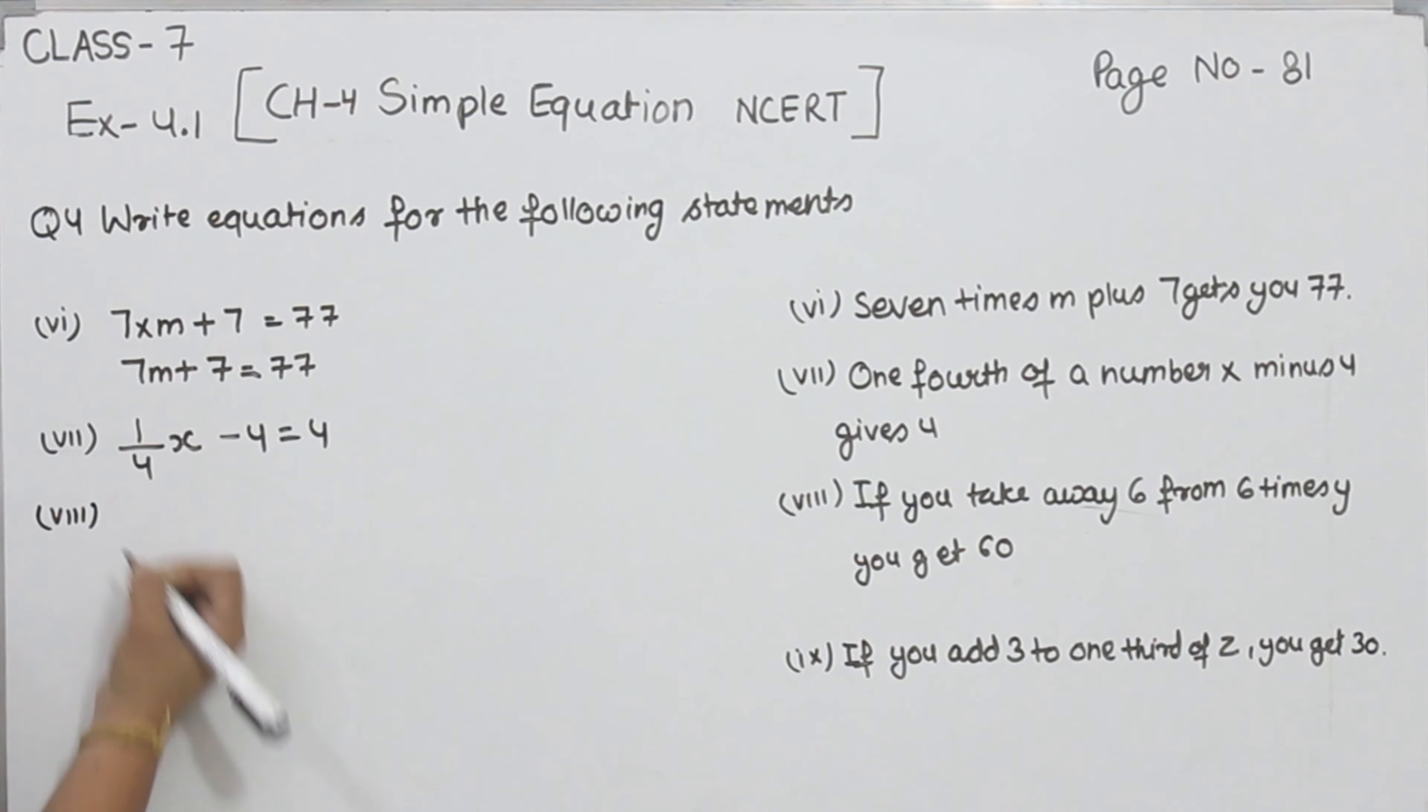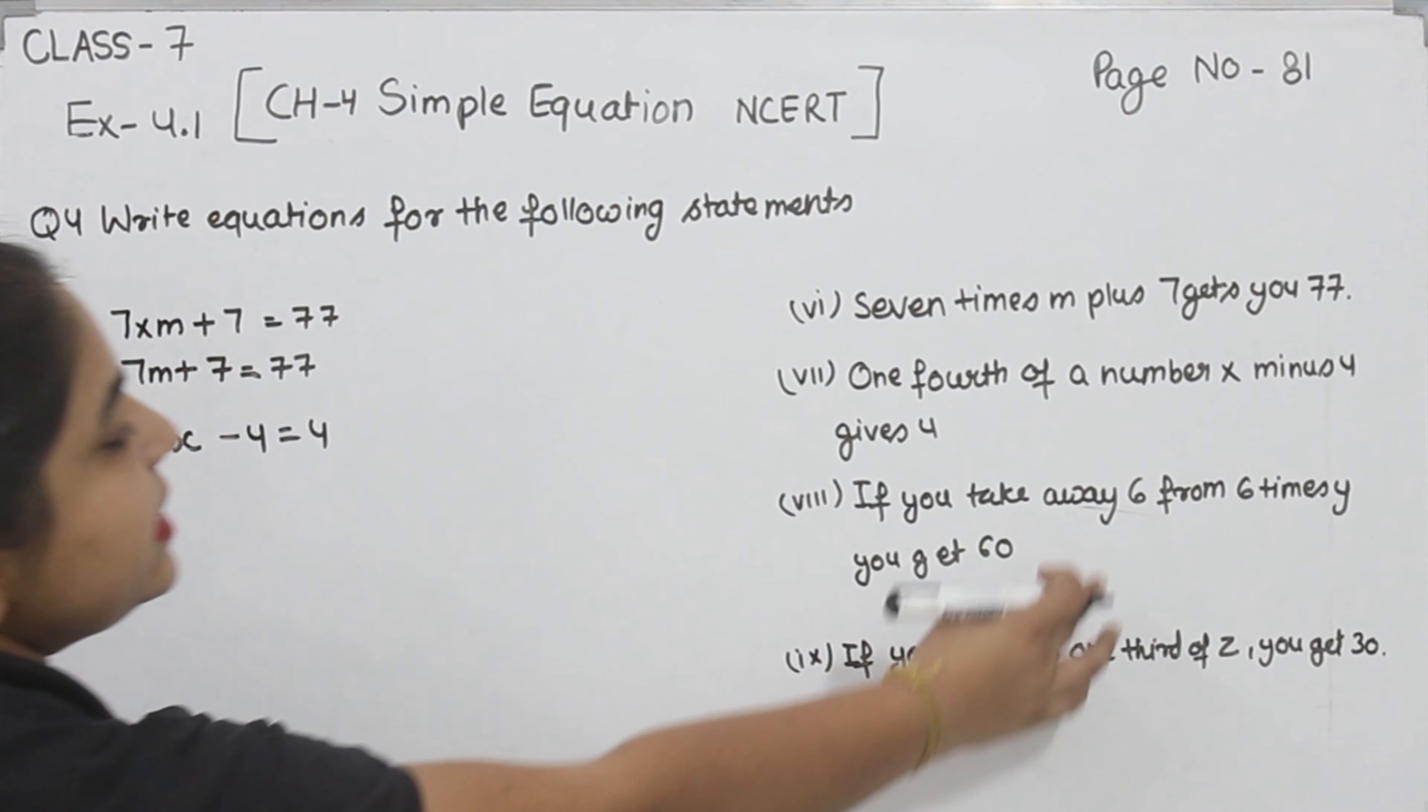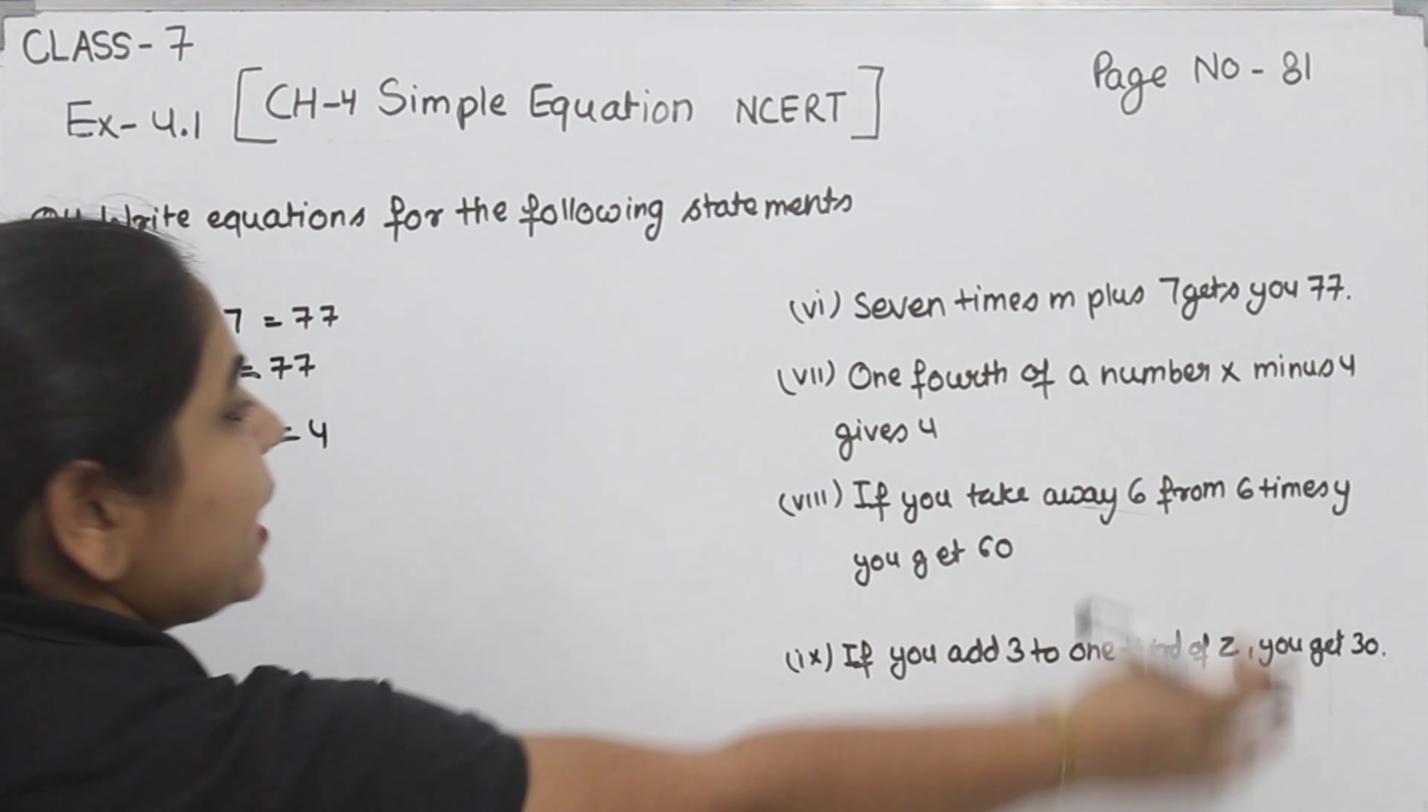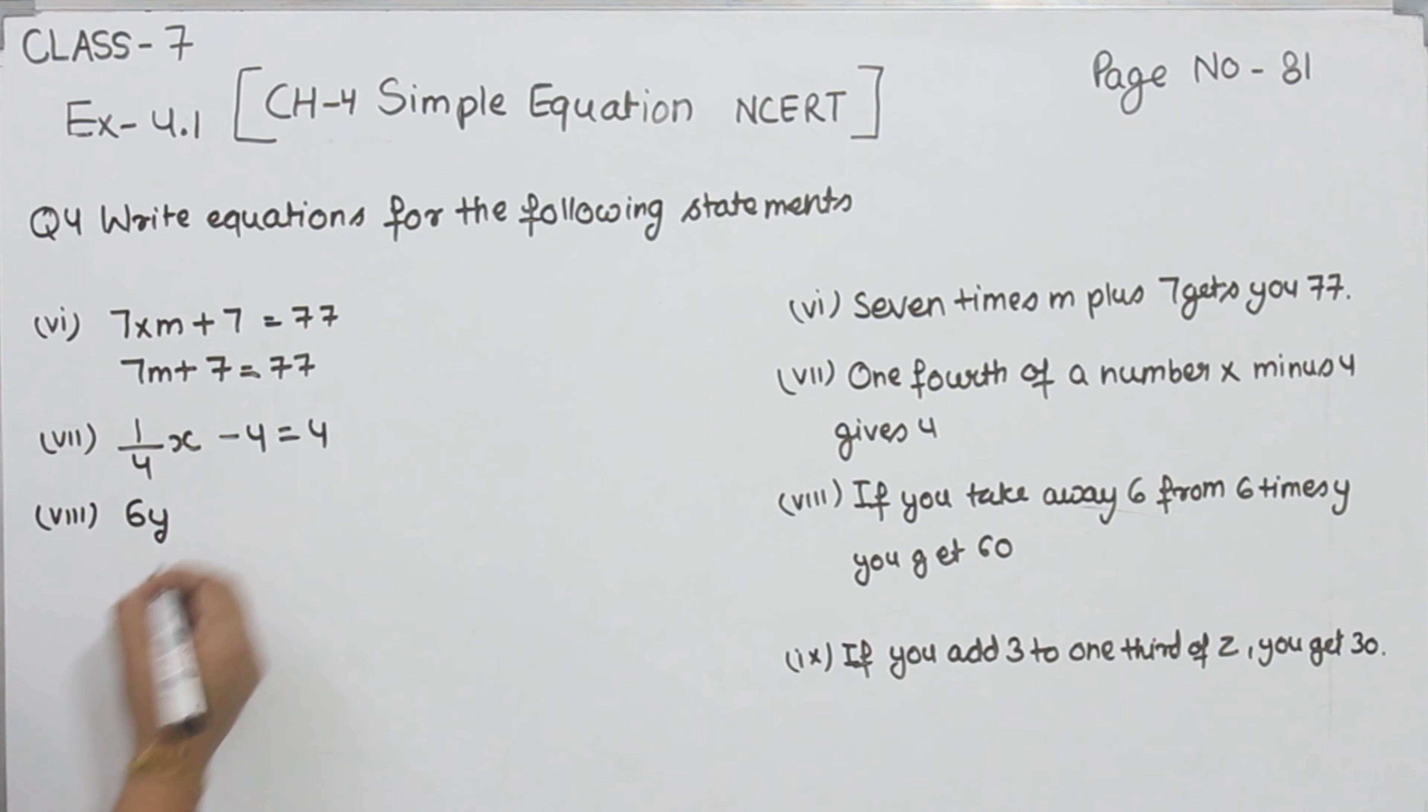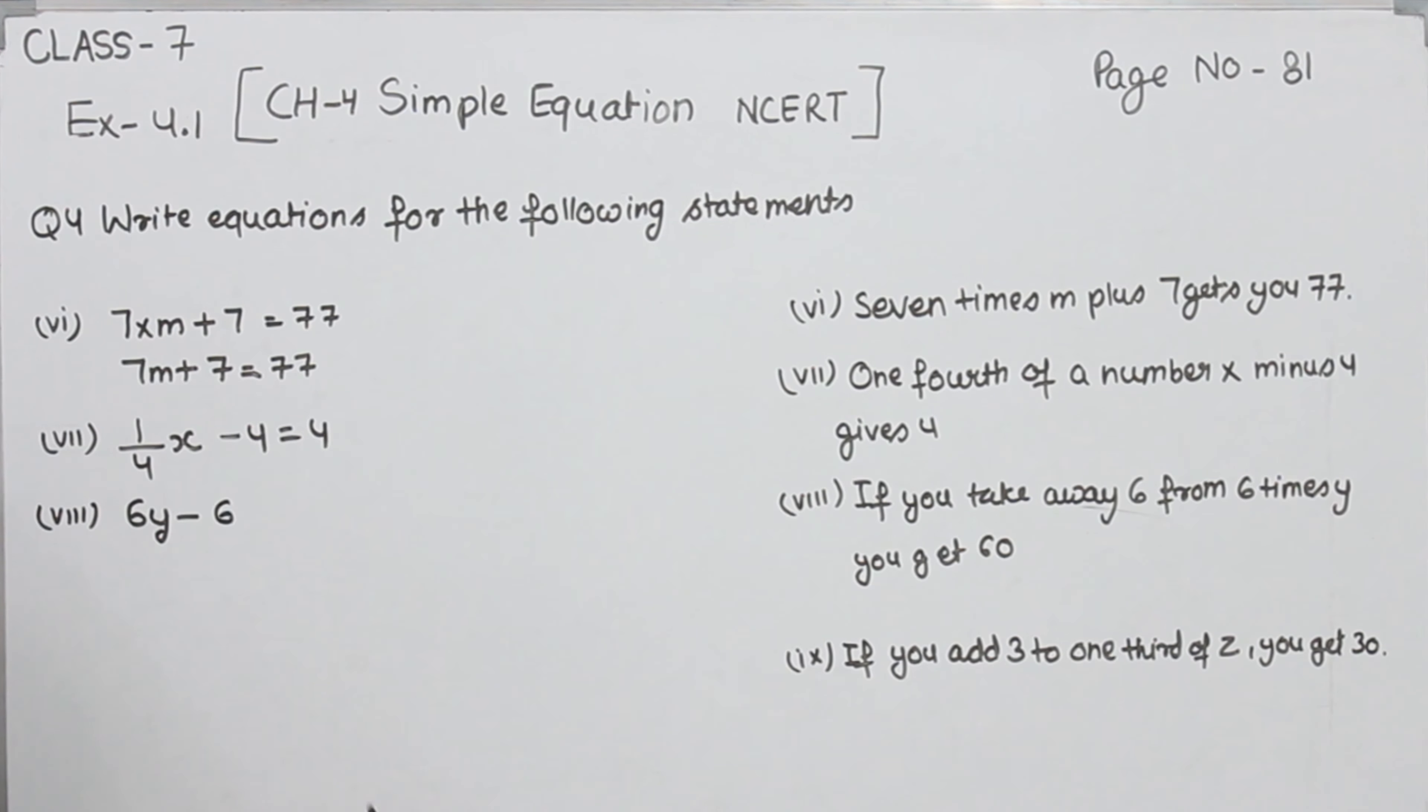Now part 8. If you take away 6 from 6 times y, first of all 6 times y is 6y. We have to take away, take away means minus, minus 6. We will get the answer 60. So the equation is 6y minus 6 is equal to 60.